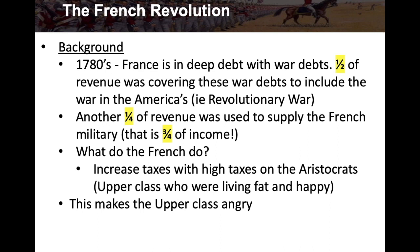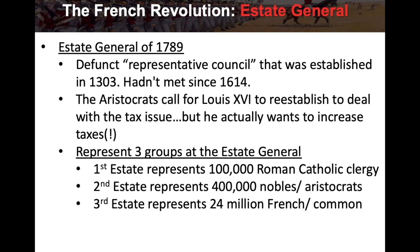The French decide they're going to increase taxes with high taxes on the aristocrats — the upper class, the nobility. These upper class people are living a good life: they have mansions, estates, lots of food and servants. Putting high taxes on the aristocrats makes the upper class unhappy, so the aristocrats call for Louis XVI to deal with this problem.